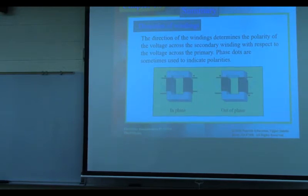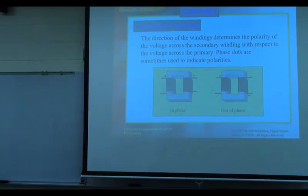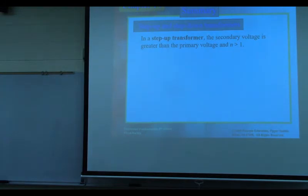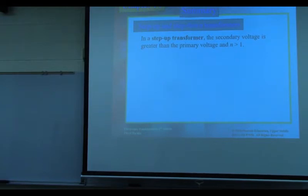Out of phase means the phase difference is 180 degrees. From trigonometry, cosine of 180 degrees equals negative one, and cosine of zero equals positive one — so one is positive one and the other is negative one. Next, we discuss step-up and step-down transformers. A step-up transformer means the voltage on the secondary is higher than the voltage on the primary.